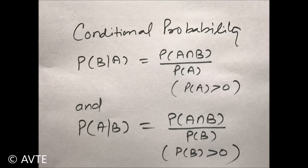The conditional probability of B given A is equal to the probability of A intersection B divided by P(A), where P(A) is greater than zero. Similarly, the conditional probability of A given that B is happening is P(A|B), which is equal to P(A intersection B) divided by P(B), where P(B) is greater than zero.